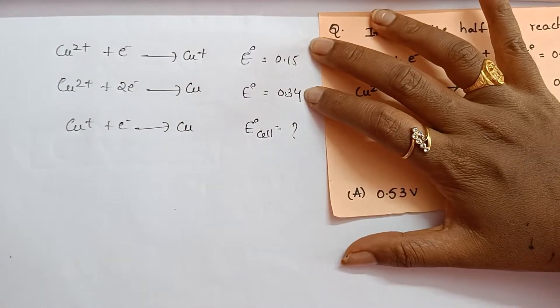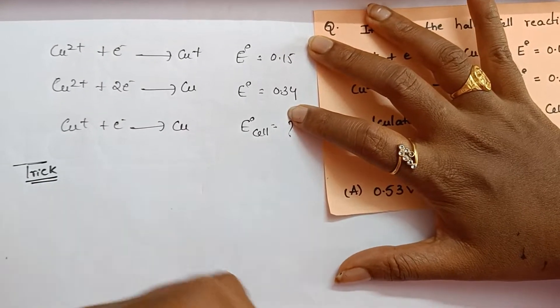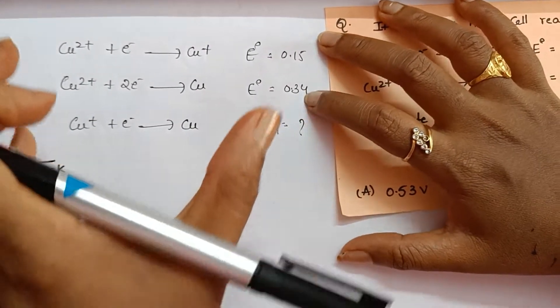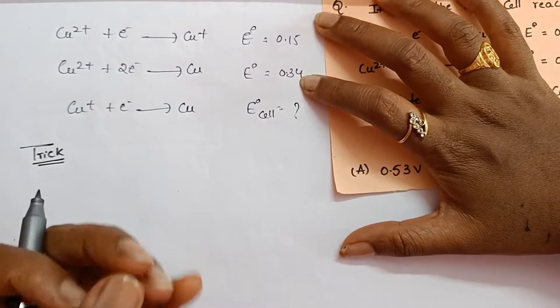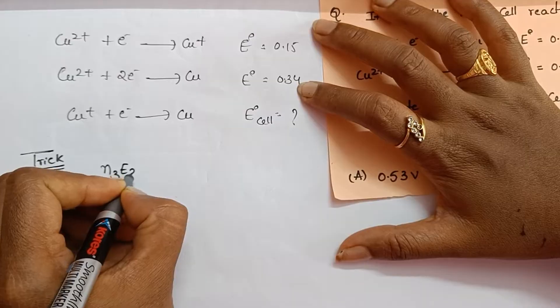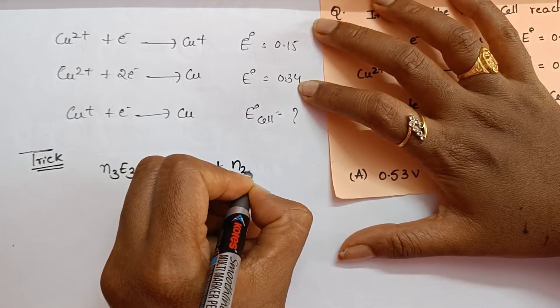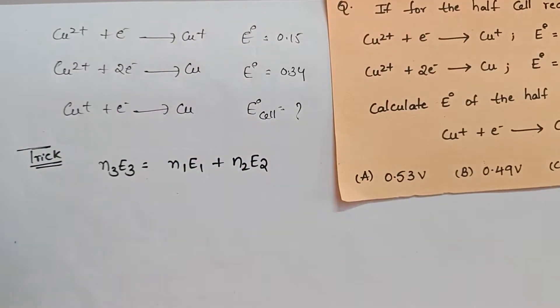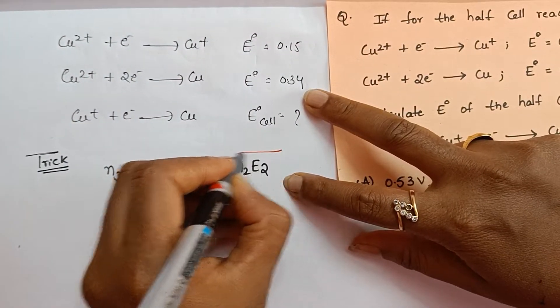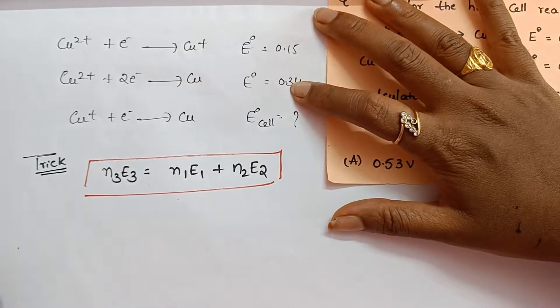Trick to solve this kind of two reactions if given, for the third reaction if they are asking E naught cell. In such a case, excellent formula. If you use this easily you can solve. Here, a super trick I will teach you. That is N3E3 is equal to N1E1 plus N2E2. This is the formula. Repeat the formula students: N3E3 is equal to N1E1 plus N2E2.